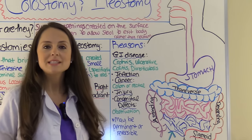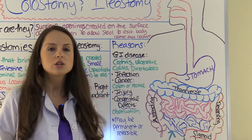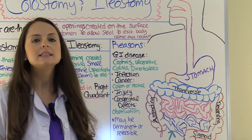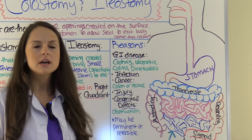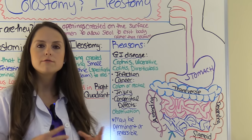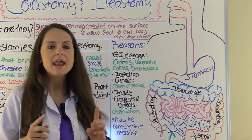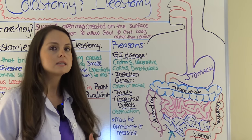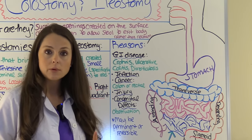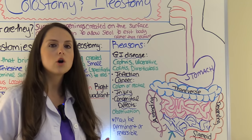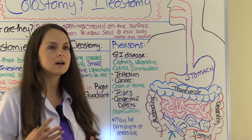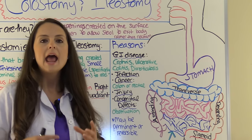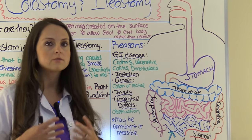Before we dive into the lecture about colostomies, ileostomies, and nursing care, let's go back to the basics and look at the anatomy and physiology of the GI tract and how food flows through the system. Be sure to pay attention to the small intestines, specifically the ileum and where it's located, and the parts of the large intestine like the colon areas, because this is where your ostomies are going to be located.